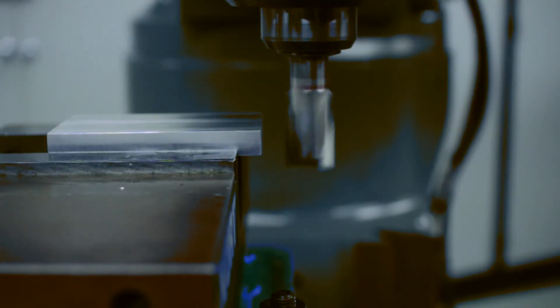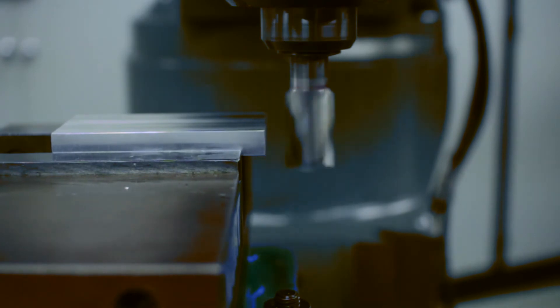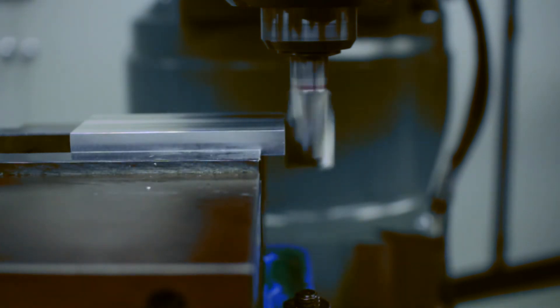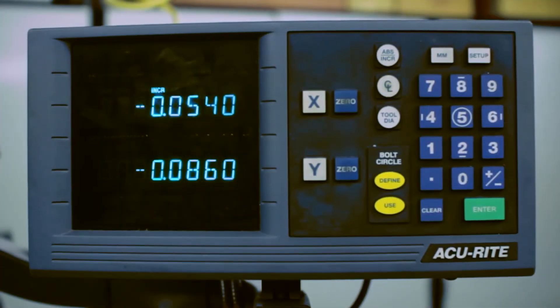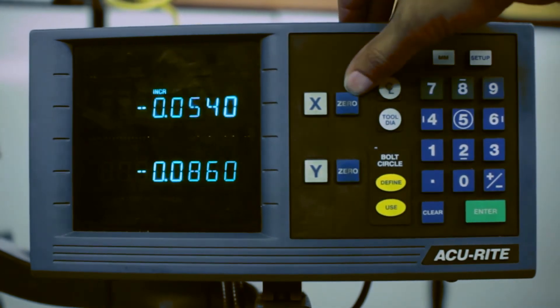Turn on the spindle and slowly bring the tool to the part. When your tool has touched the part, push the X0 button.